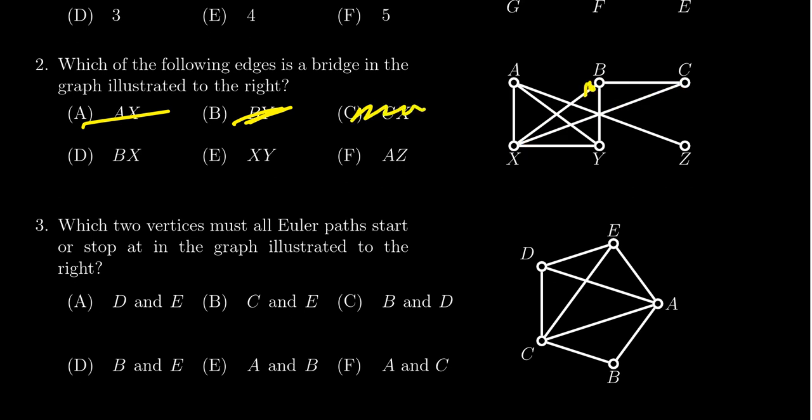BX, same thing there. If you take away BX, you can still get from B to X, and so since there still is a path from B to X, that means the graph has to still be connected. What about XY here? If you take away XY, I can still get from X to Y.